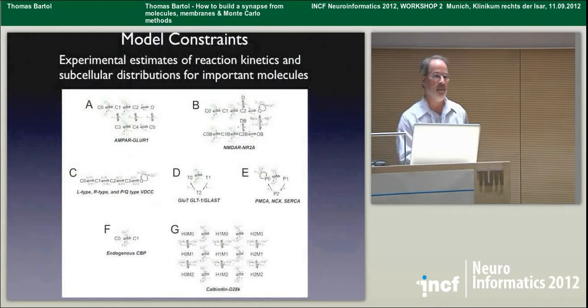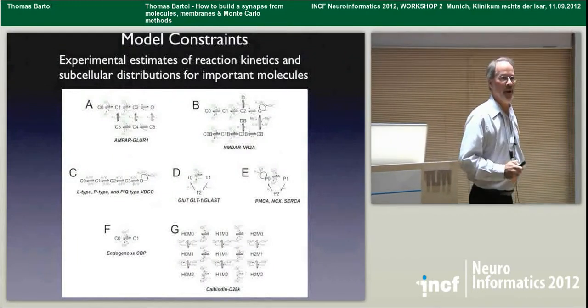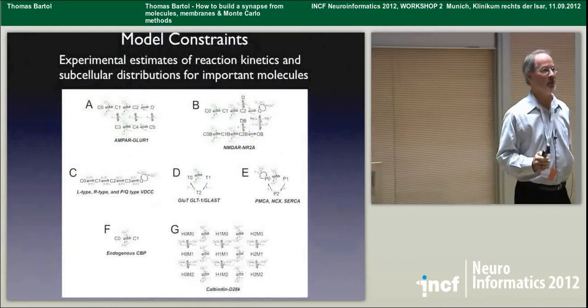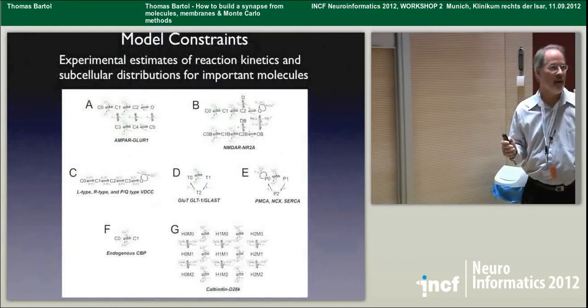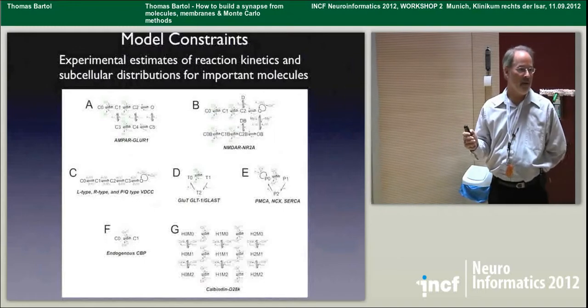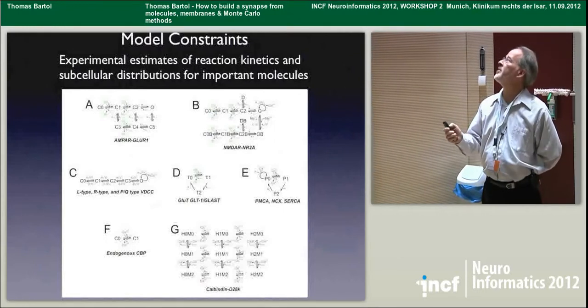Justin was able to write an algorithm that corrected these errors and got back to an extracellular space volume fraction thought to be the same as what occurs in vivo — about 22% ECS fluid. Having made those corrections, we now have a proper geometry for performing our simulations in.